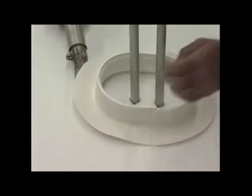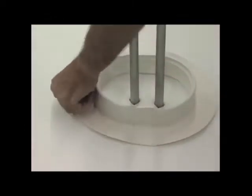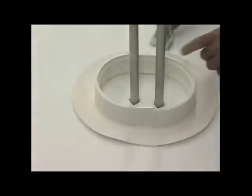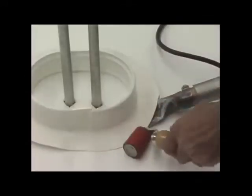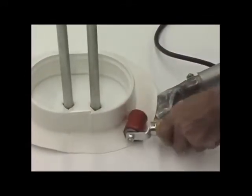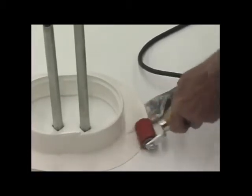Step 8: Tack weld all four sides of the pocket to prevent movement during the welding process. Step 9: Weld the entire horizontal flange to the deck membrane.